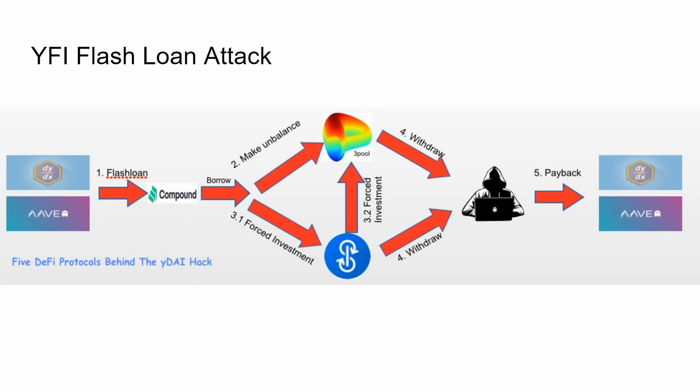Even complicated and sophisticated DeFi protocols like Yearn suffer from flash loan attacks because they interact with other protocols. The attacker got money from DYDX and Aave and used it to destabilize a pool in Curve, leveraging differences between protocols to make a payoff of around $11 million worth of crypto assets. It's really because these protocols don't talk to each other — they're very isolated and rely on separate oracles sampling isolated populations — so they don't reflect real-world data.